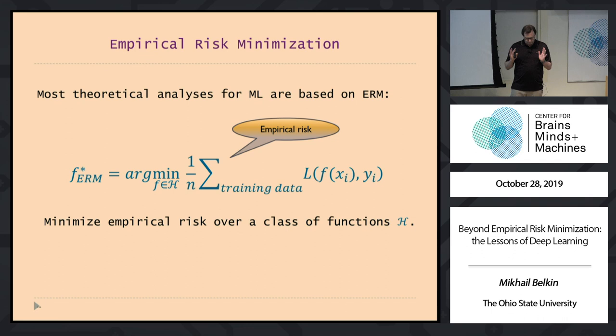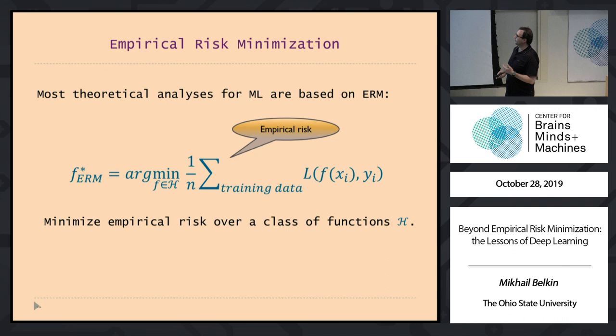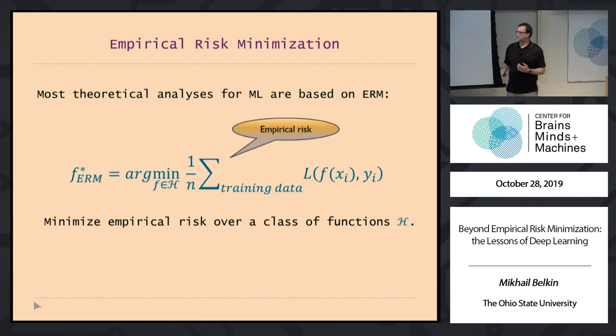One lesson that I will primarily talk about today — and I think it's quite a powerful lesson — is that we really need a new theoretical foundation for certain aspects of machine learning, and we have to revisit the assumptions that we had. Before getting into what's new, we have to understand what we have. The basic premise for most theoretical analysis in machine learning has been empirical risk minimization. You take a class of functions H, and you choose a function from the class to minimize the loss on the training data.